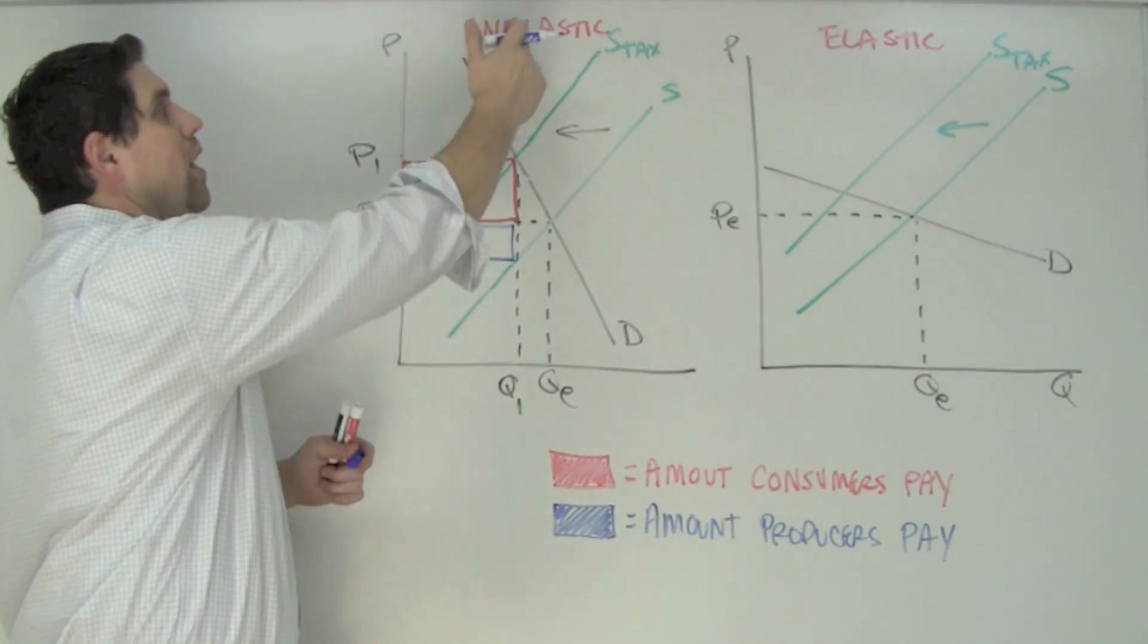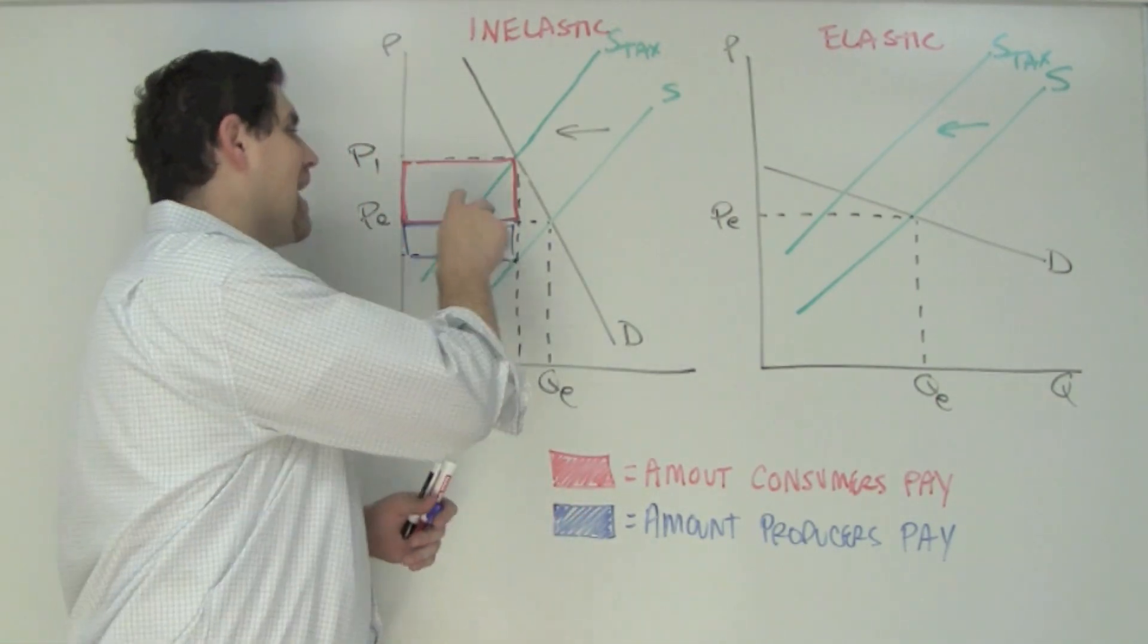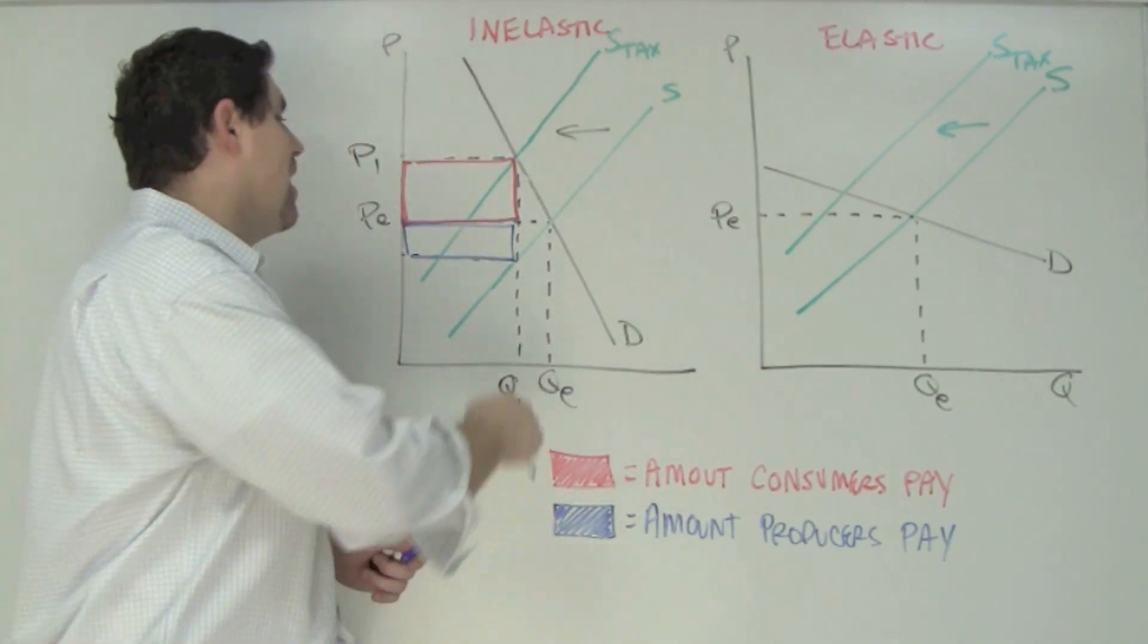Consumers. So when the demand is relatively inelastic, consumers pay a larger portion of that tax. In other words, the burden of the tax is more on consumers than it is producers.